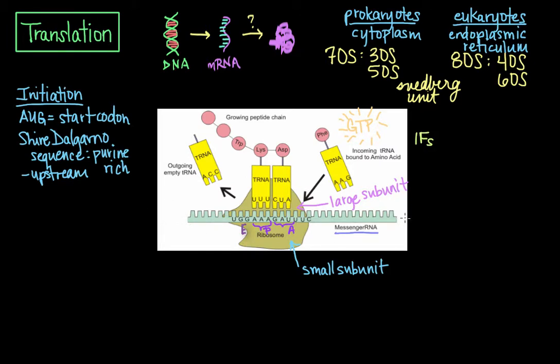The Shine-Delgarno sequence is complementary to a pyrimidine-rich region on the 16S ribosomal RNA component of the 30S subunit in prokaryotes. And during the formation of the initiation complex, these complementary nucleotide sequences pair up to form a double-stranded RNA structure that binds the mRNA to the ribosome in such a way that the initiation codon, the AUG codon, is placed at the P site.